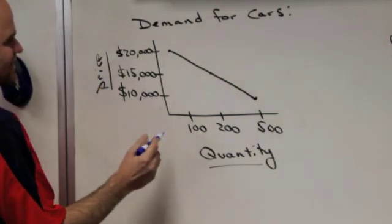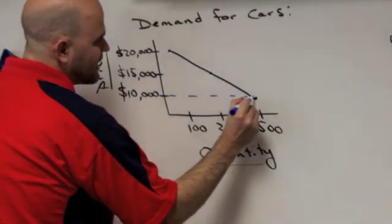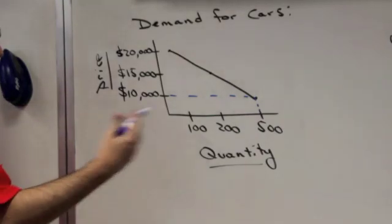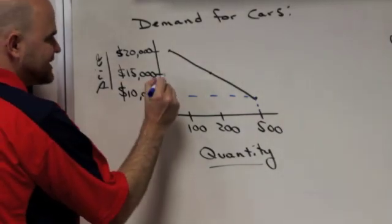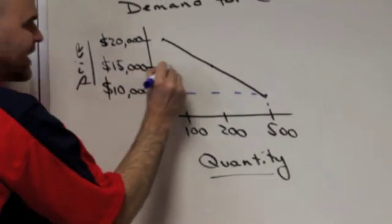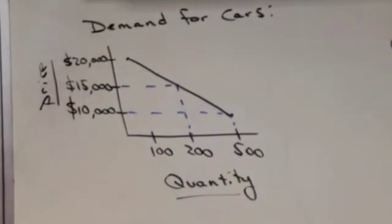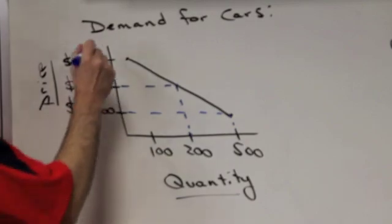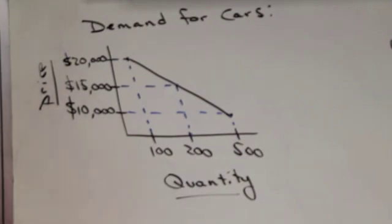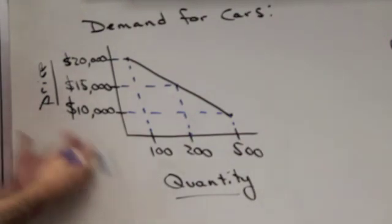Price $10,000 and if you read the graph you see that 500 are being demanded. $15,000 so the price goes up and as you know with the law of demand now people are buying less. Hopefully that's just common sense. Price goes up again $20,000 and 100 are being demanded by the consumer.